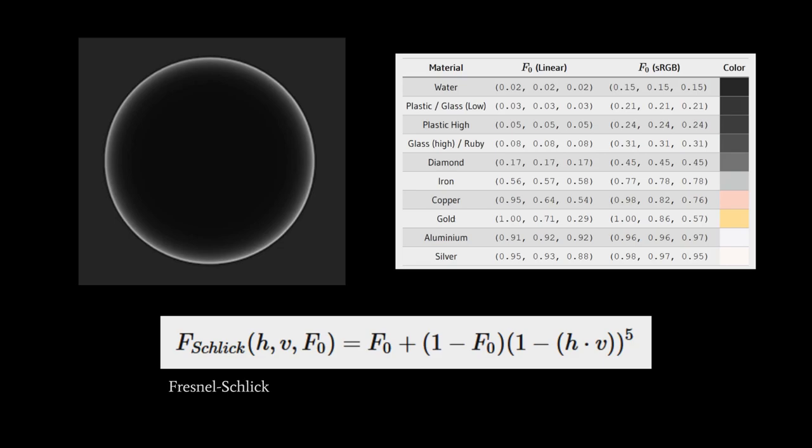But then for metals, these values are much higher. At the low end, you have, say, iron, which is 0.56, 0.57, 0.58. And then at the high end, you have metals like silver, which is 0.95, 0.93, and 0.88.